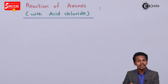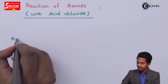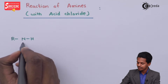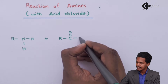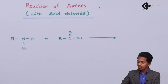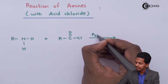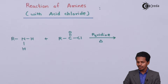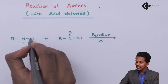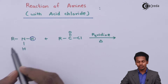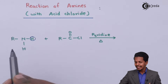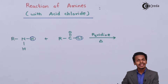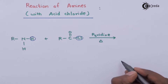We can consider the primary amine as RNH2. Suppose if this reacts with acid chloride, that is RCOCl, in the presence of a solvent like pyridine and at high temperature. In this case, one of the hydrogens of the amine group — the hydrogen attached to nitrogen — along with the Cl, will be removed in the form of HCl as a byproduct.